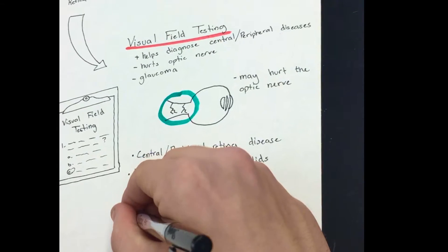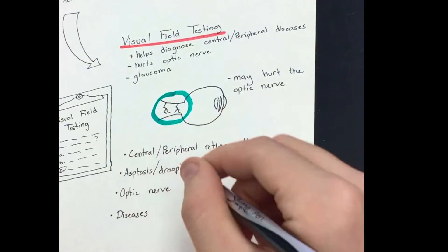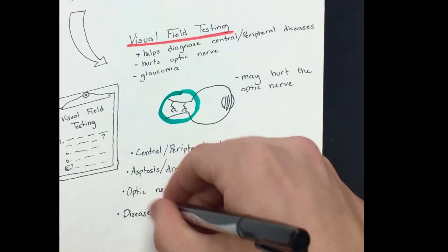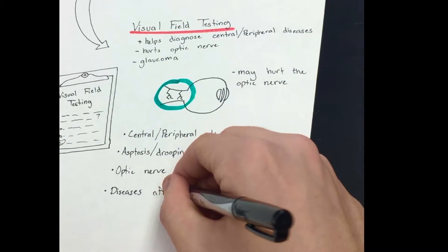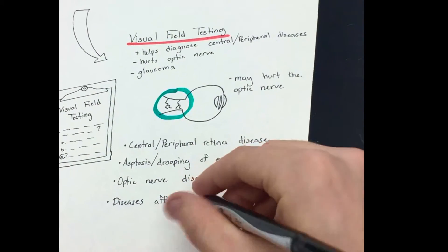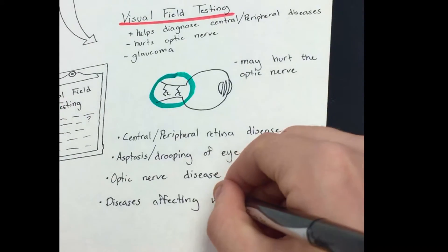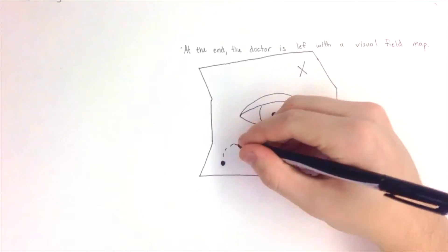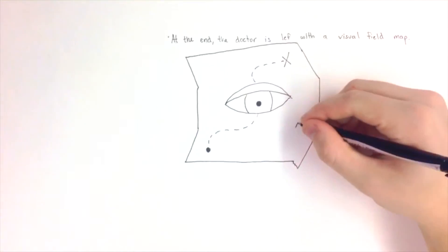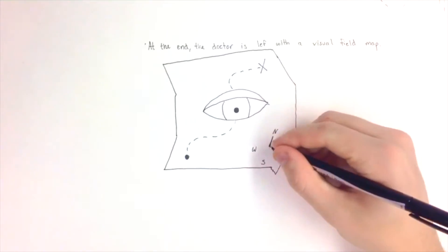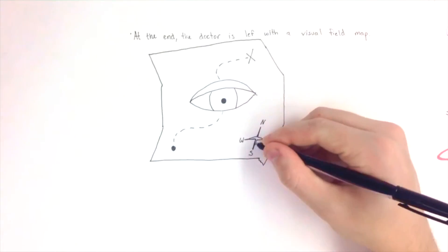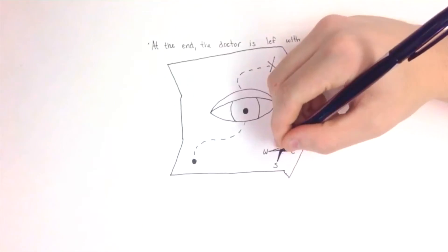Visual field testing can help diagnose problems with the eye, such as damage to the optic nerve or glaucoma. Also, visual field tests are useful for detection of central or peripheral retinal disease, eyelid conditions such as ptosis or drooping, optic nerve disease, and diseases affecting the visual pathways within the brain.